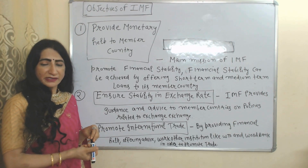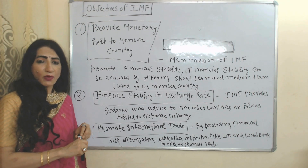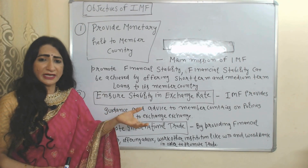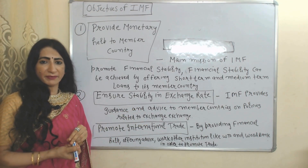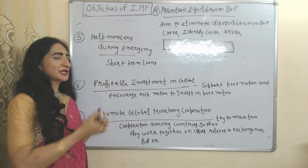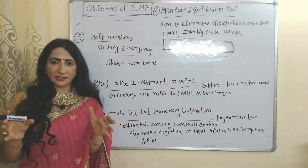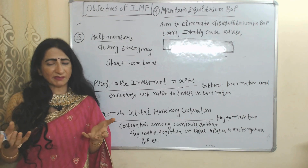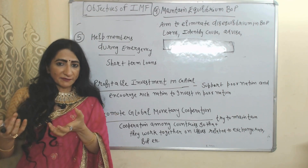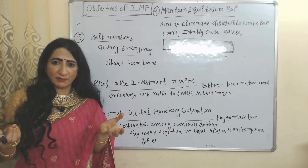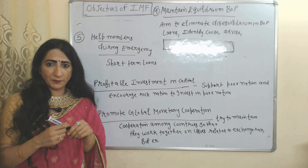Third objective: promote international trade — IMF promotes international trade of member countries by providing financial help and policy advice, and also works with organizations like the World Trade Organization and World Bank. Next objective: maintain equilibrium in balance of payment — IMF tries to eliminate imbalance in balance of payment, and whenever any member country faces a deficit, IMF gives monetary help and advice so they can correct their balance of payment.